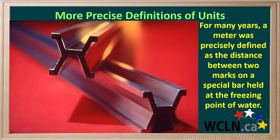For many years, a meter was precisely defined as the distance between two marks on a special bar made from an alloy of platinum and iridium. Because metals expand or contract with temperature changes, the bar was kept at the freezing point of water.